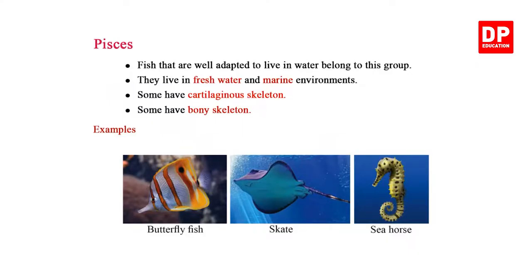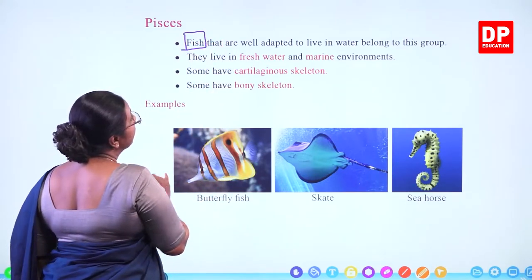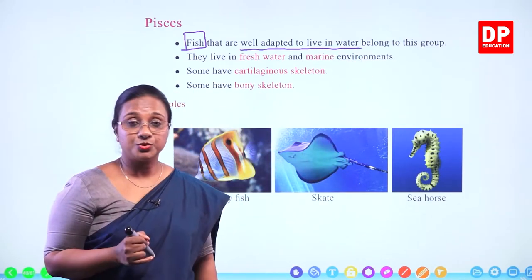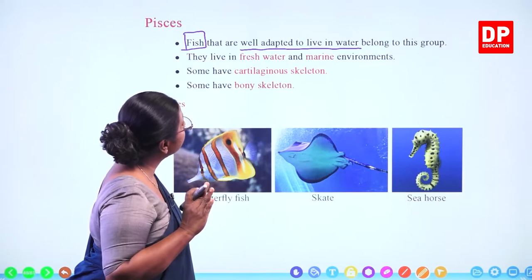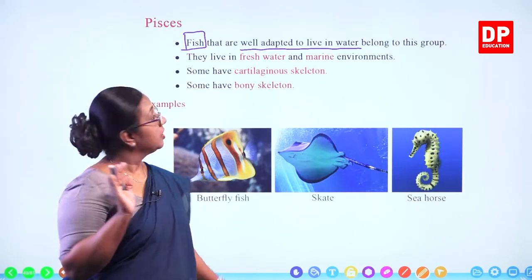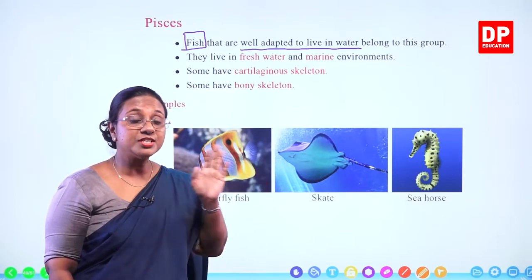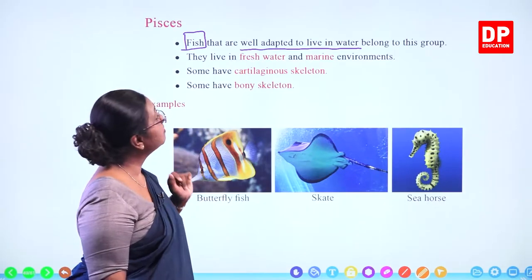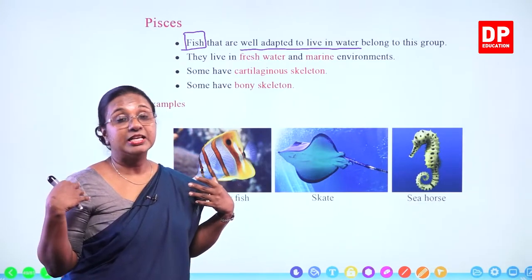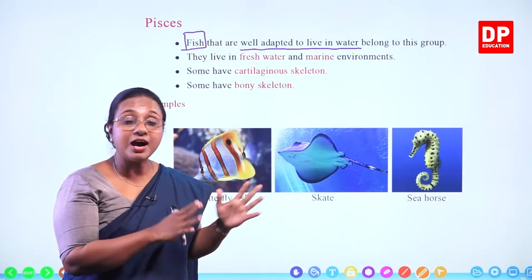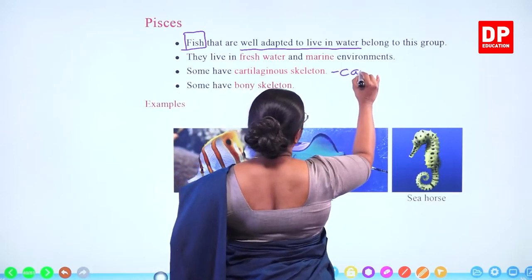Under vertebrates, we look at the first group: Pisces — these are the fishes. Fish that are well adapted to live in water belong to this group. They live in freshwater and marine environments. Some have cartilaginous skeletons — we call those cartilaginous fish. Then we call those fishes as cartilaginous fish.